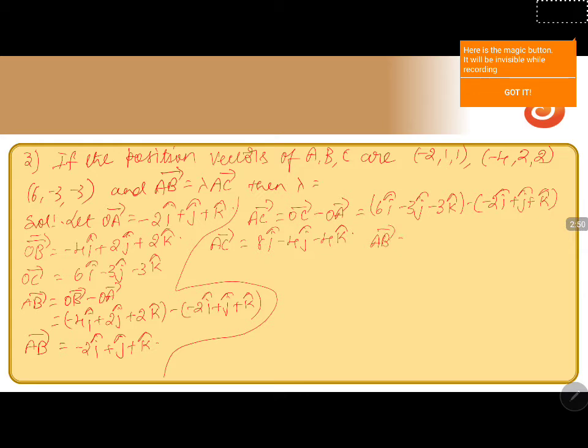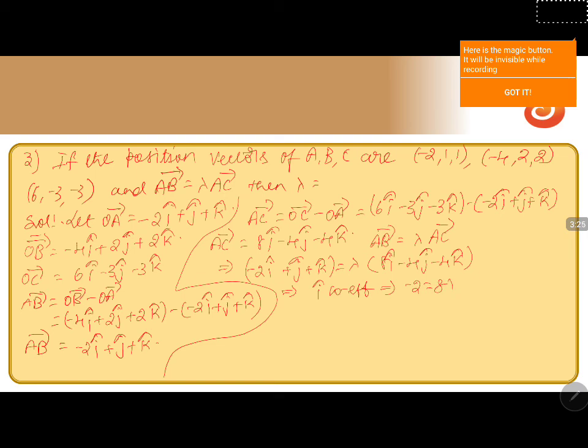Now, AB vector equals lambda into AC vector, so minus 2 i-cap plus j-cap plus k-cap equals lambda into 8 i-cap minus 4 j-cap minus 4 k-cap. By comparing the i-cap coefficients on both sides, we get minus 2 equals 8 lambda, therefore lambda equals minus 1 by 4.